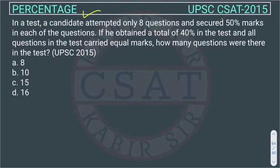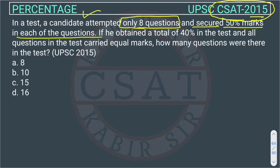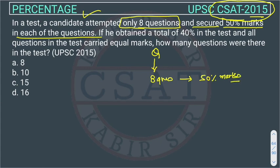This is a percentage question asked in the UPSC CSET exam 2015. In a test, a candidate attempted only eight questions and secured 50 percent marks in each of the questions. Suppose there are Q number of questions total, and he attempted only eight questions out of that. He is getting only 50 percent marks — not full marks — in each question.